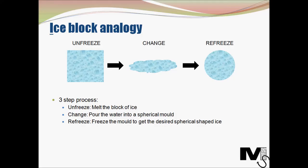Lewin looked at the analogy of a block of ice to explain his change management model. Let's presume that we've got a block of ice and we actually wish to have a sphere of ice. We'll need to follow a three-step process. Firstly, we need to melt the block of ice, which is the unfreeze process. Then we'll need to pour the water into a spherical mold, and the last part is to freeze the mold to get the desired spherical shaped ice. Now let's look at how this analogy translates across to the business world.